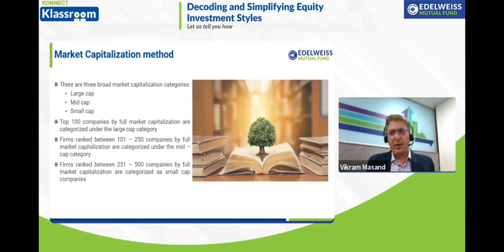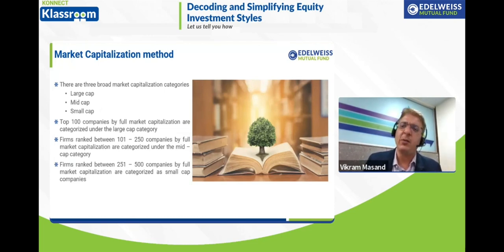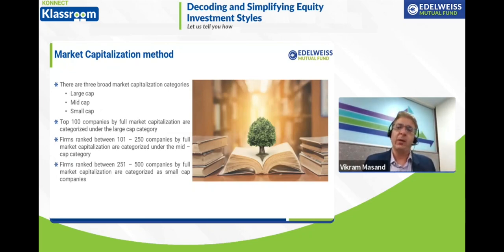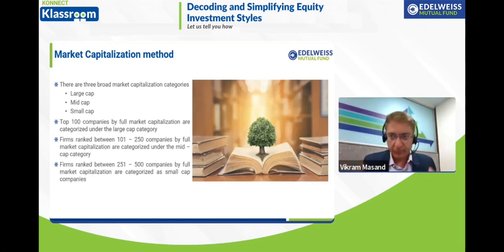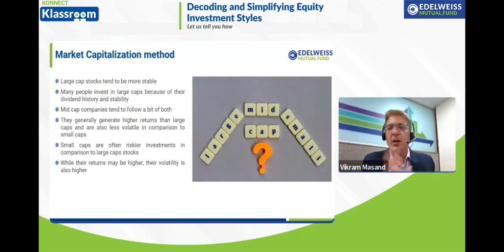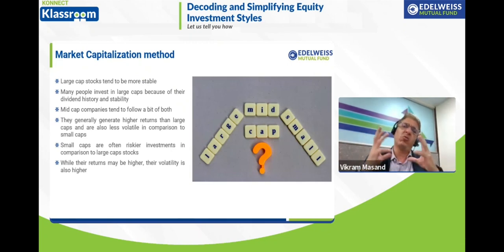Let's start with market capitalization — the most common and most traditional way of investing. We have broadly three types: large cap, mid cap, and small cap. Your top 100 companies by market capitalization are called large cap. Companies ranked 101 to 250 are mid cap. Large cap companies have a lot more stability compared to mid and small cap, and also have a dividend history showing profitable performance.